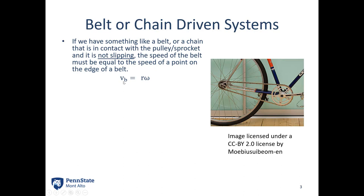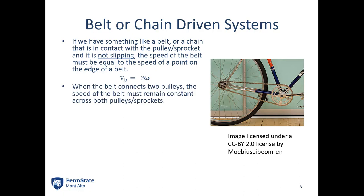When the belt connects two pulleys, or a chain connects two sprockets, the belt must remain at a constant speed across both. If there were different speeds at different locations, the belt would be piling up in some places and stretching out in others.